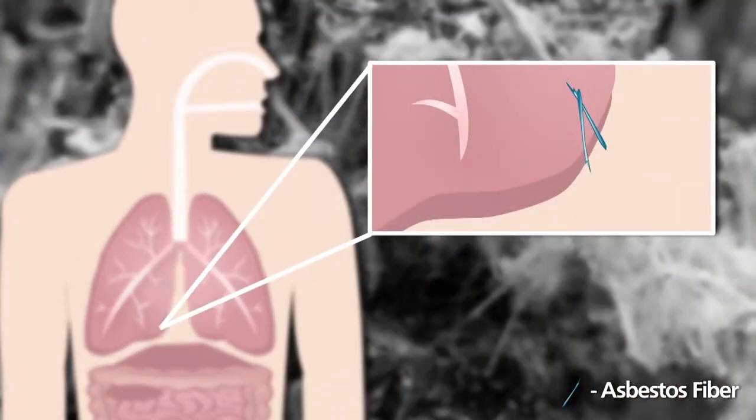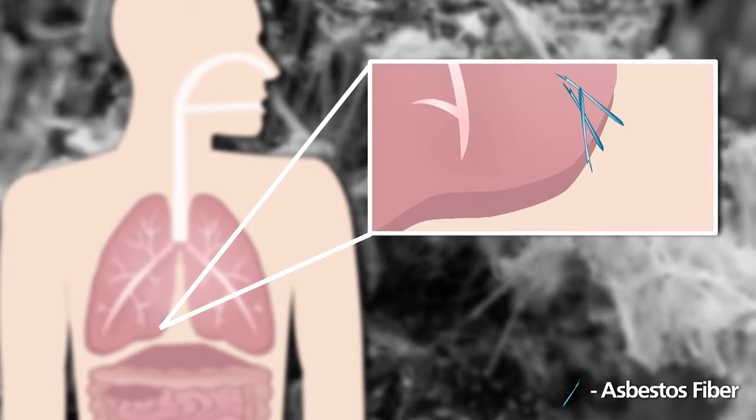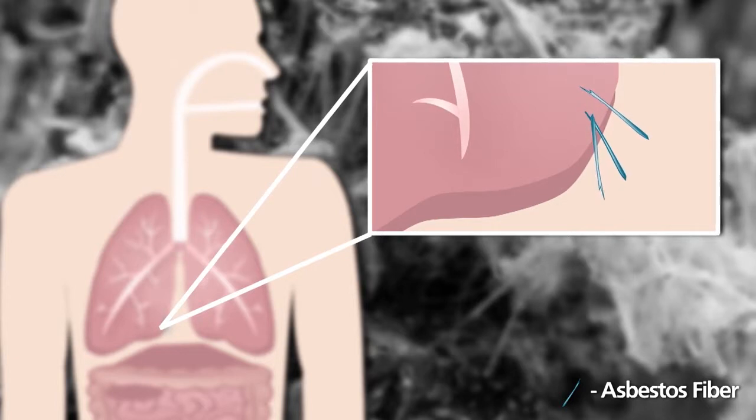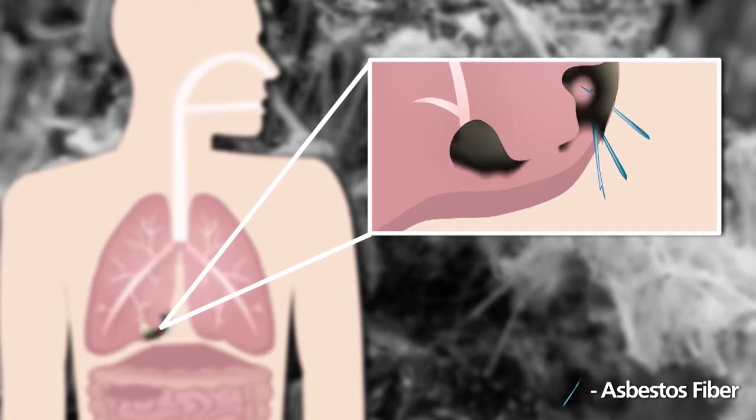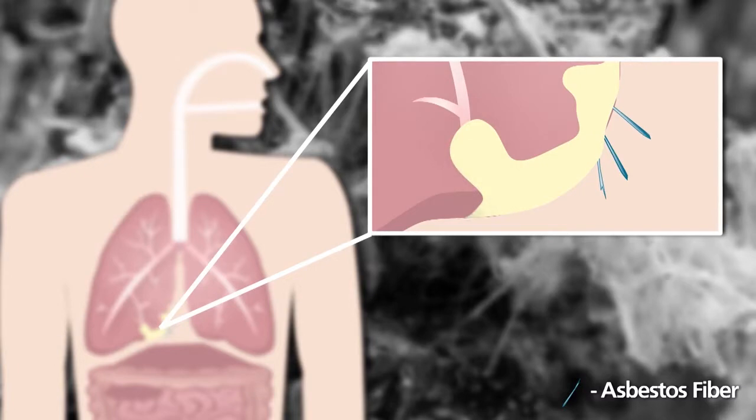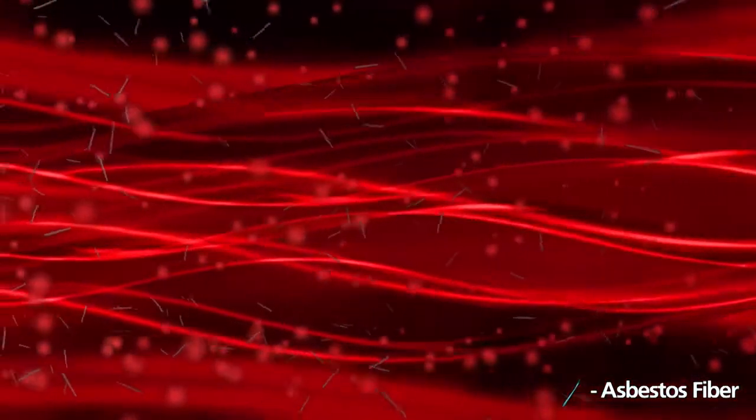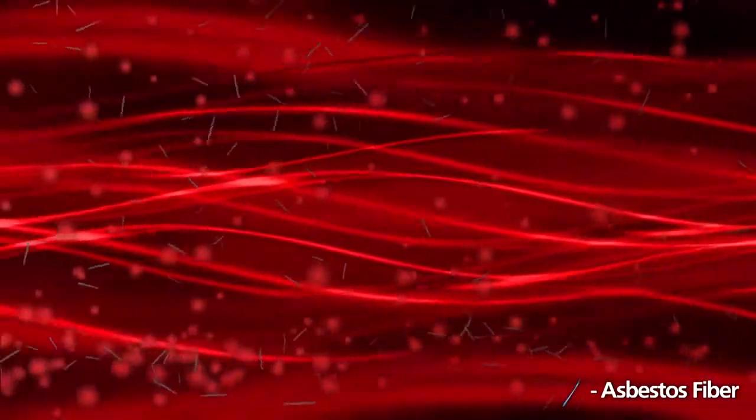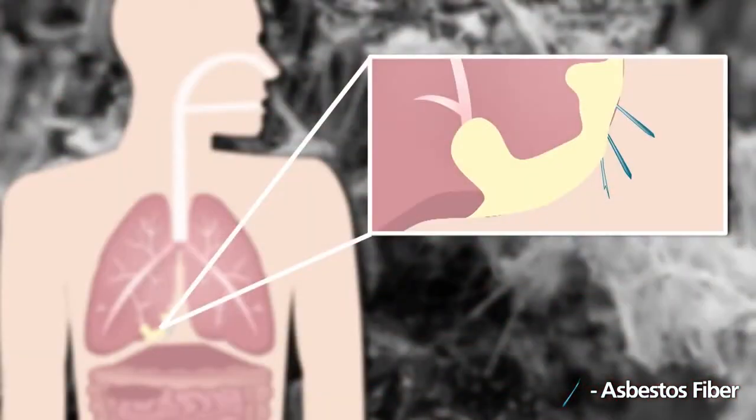Once inhaled, asbestos fibers travel into the lungs and may become lodged in lung tissue. Some of these lodged fibers can travel from inside the lung to the outside lining of the lungs, and this is where mesothelioma cancer forms. Other fibers might travel to distant parts of the body via the bloodstream or the lymph, but scientists are still trying to prove this theory.